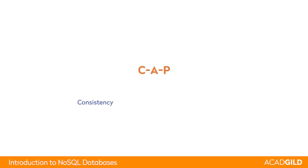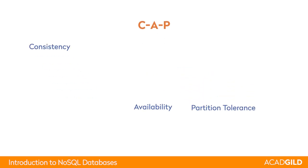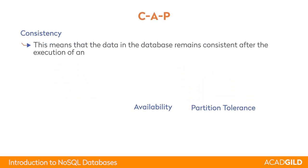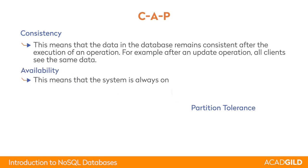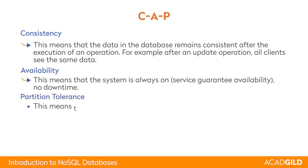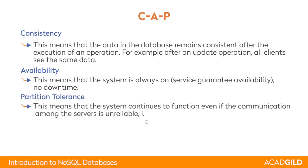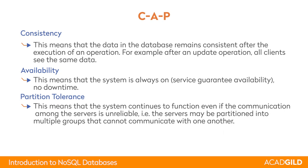CAP stands for Consistency, Availability, and Partition Tolerance. Consistency means the data must be consistent before and after execution, and every user should see the same data. Availability means the system should always be up and running, even if a few machines go down, and it should be able to operate on the working machines. Partition Tolerance means if one machine goes down, it should not hamper the working of the other machines.